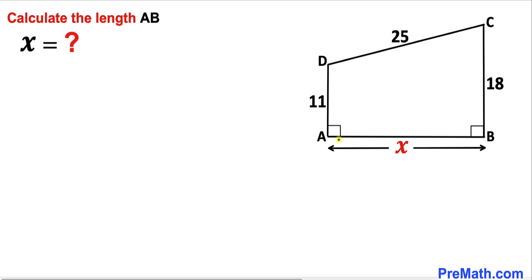Welcome to PreMath. In this video we have got this quadrilateral ABCD as you can see in this diagram such that side length BC is 18 units, side length CD is 25 units, and side length AD is 11 units. Now we are going to calculate this side length AB which is represented by x. Please don't forget to give a thumbs up and subscribe.